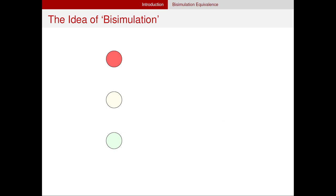Suppose we want to design three-colored traffic lights: a red signal, a yellow signal, and a green signal, and then come back to red. Here A1, A2, and A3 are actions. You can interpret A1 as the things you need to do to turn off the red light and turn on the yellow light. Similarly with A2 and A3.